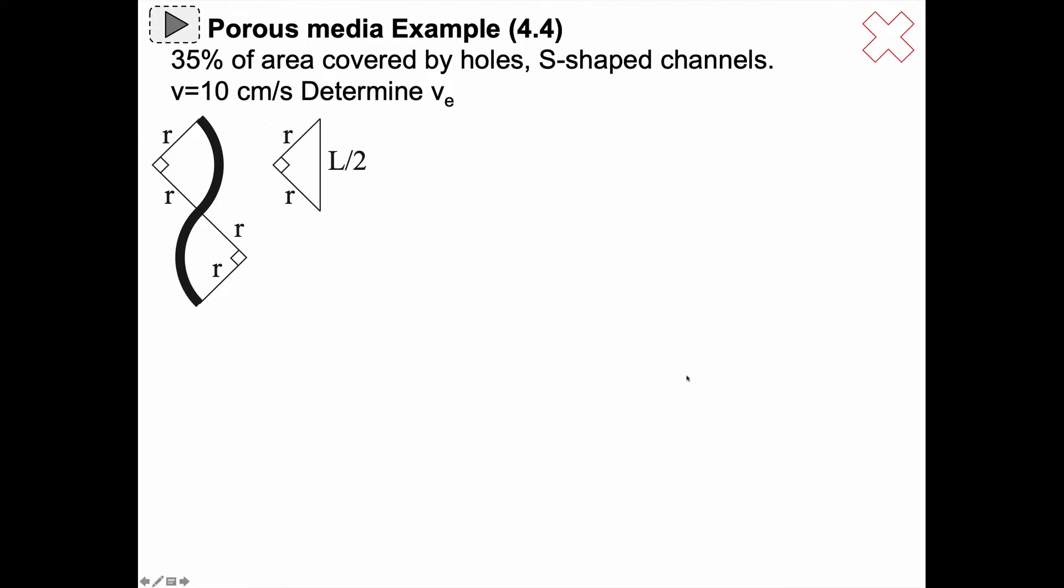It's a porous media where 35 percent of the area is covered by holes and the channels are S-shaped like this. So they have a bend with radius r and the thickness of the material is from this point here down here. So it's a quarter circle bend and then there's another quarter circle in the other direction.